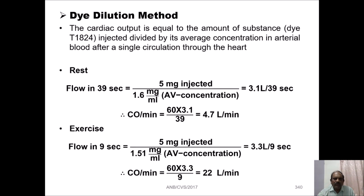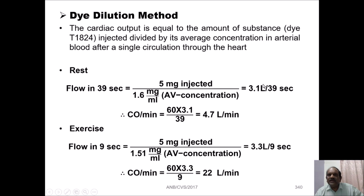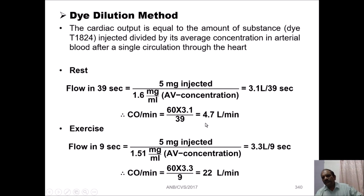Let us assume we have injected 5 mg of the substance. The average concentration in the arterial blood is 1.6 mg per ml. The total time taken for this substance to circulate in the body is 39 seconds; hence, the flow for 39 seconds is 3.1 liters. Converting to 60 seconds: 60 multiplied by 3.1 divided by 39 gives a cardiac output of 4.7 liters per minute, which is the cardiac output determined at rest.